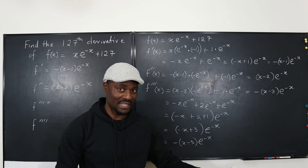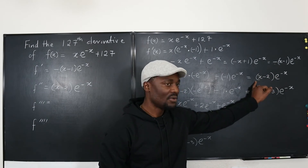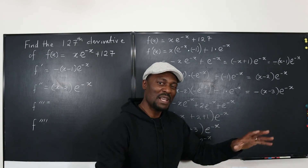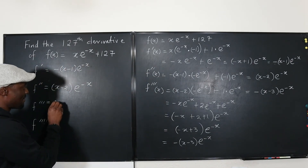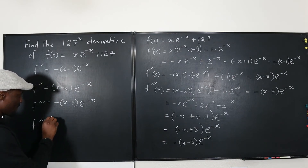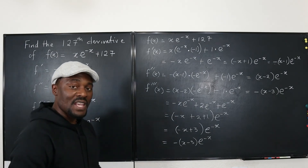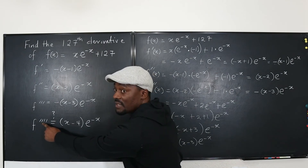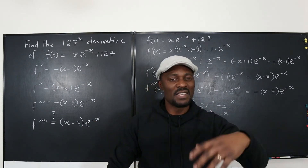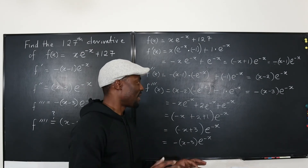We can almost predict what happens next: when the derivative order is odd we get a negative; when it's even we get a positive. This is exactly how (−1)^n behaves — (−1)^2 = 1, (−1)^3 = −1. So our prediction for the fourth derivative is that it should be positive and equal to (x − 4)·e^(−x). Let's verify by taking the fourth derivative.